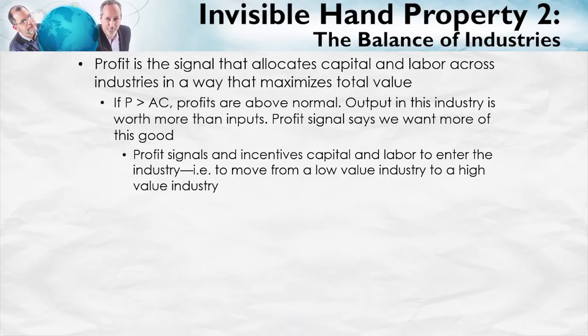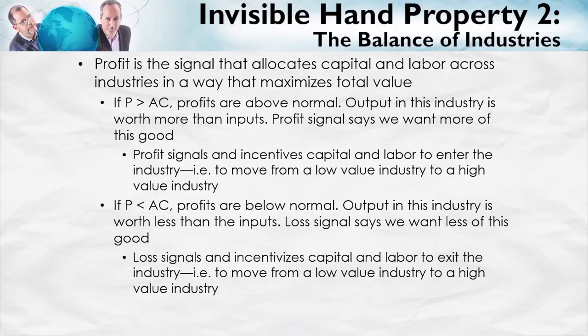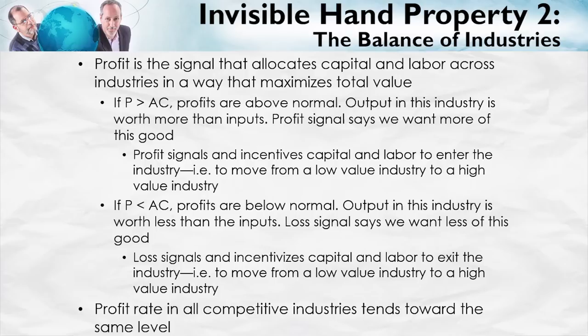Similarly, if price is less than average cost, profits are below normal. That means output in this industry is worth less than the inputs, so the loss signal is saying we want less of this good. Loss signals and incentivizes capital and labor to exit the industry — to move from a low-value industry where there are losses to a higher-value industry. Because of this entering and exiting, the profit rate in all competitive industries tends toward the same level, which balances production across all industries to maximize total value.